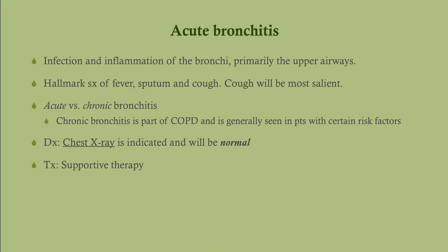Acute bronchitis is infection and inflammation of the bronchi, primarily of the upper airways. The hallmark symptoms are present, but cough will be the most salient. Chest x-ray is the best initial test, but it will be normal. We don't give antibiotics for acute bronchitis — just supportive therapy: make sure they're hydrated, and if they have a fever, give acetaminophen.